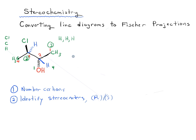So when we trace a line, if you saw a previous video on how we do this trick, we trace a line between one, two, and three. And in this case it's clockwise. Now the trick here is that this would be R if number four was pointing in the back. So if number four was a dash, but here number four is a wedge. So we're actually going to reverse this. And this is actually S. So carbon two is S.